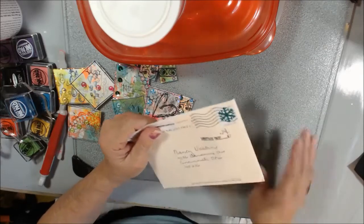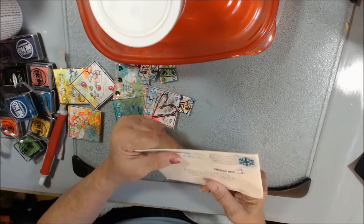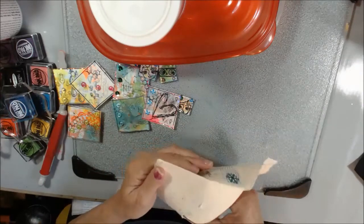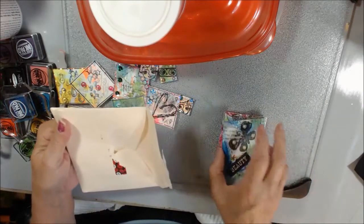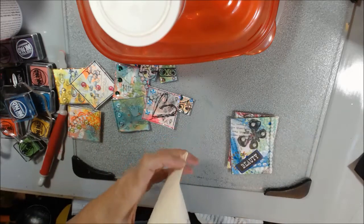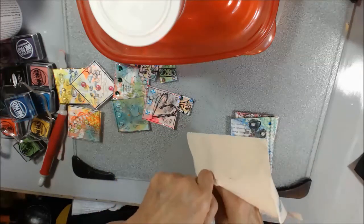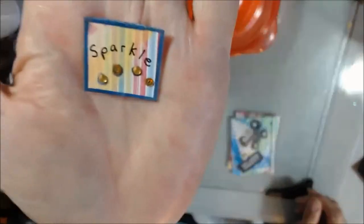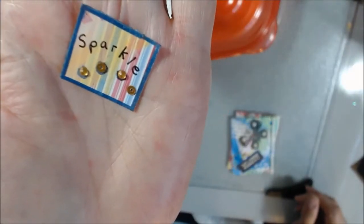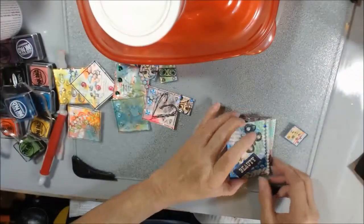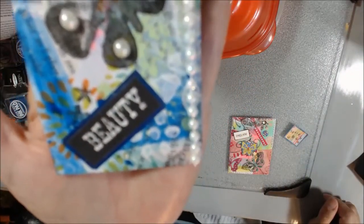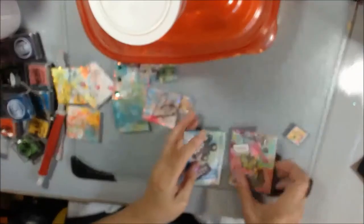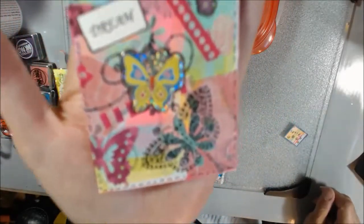Hello everyone, it's Nancy Bastien and I got an ATC in the mail from Cheryl Hill. I got it yesterday and they are beautiful. There's a little inchie she put in there, isn't that gorgeous? It says sparkle pretty. And here's the ATCs. Those are pretty, pretty, pretty and this one says dream, isn't that gorgeous?